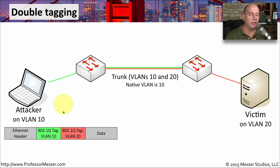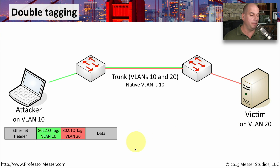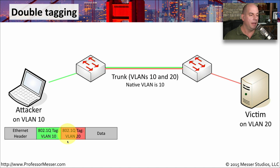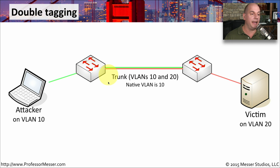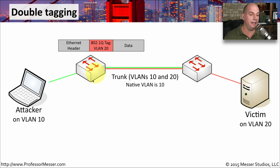To jump between VLANs, the attacker crafts a very specific kind of Ethernet frame. It has a normal Ethernet header and the data we ultimately want to get to the victim machine. In the middle are two separate 802.1Q VLAN tags — one with VLAN tag 10, and inside that is VLAN tag 20. That's the double tagging. The attacker sends that frame to the first switch, which sees it needs to go onto VLAN 10. Since VLAN 10 is the native VLAN, it simply strips off that outer tag and does not add a separate tag. We're left with the Ethernet header, the 802.1Q tag for VLAN 20, and the data.